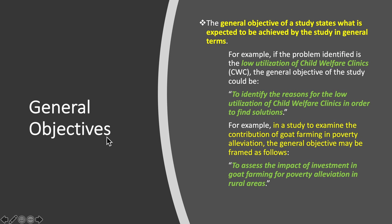General objectives: the general objective of a study states what is expected to be achieved by the study in general terms — overall, what is the general aim of conducting this research. For example, if the problem identified is the low utilization of child welfare clinics, the general objective could be to identify the reasons for low utilization in order to find solutions.